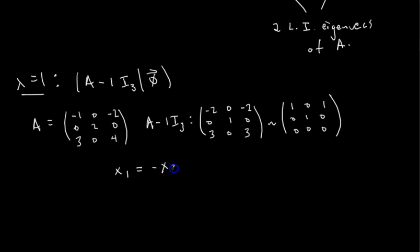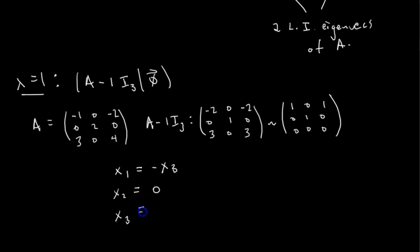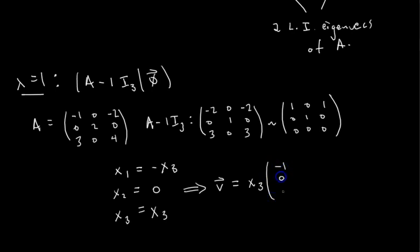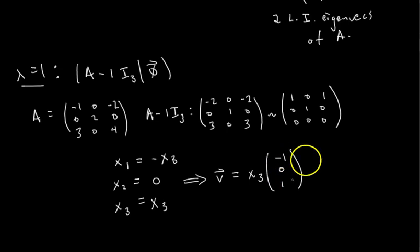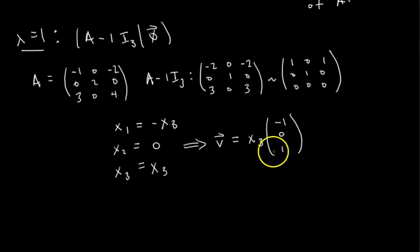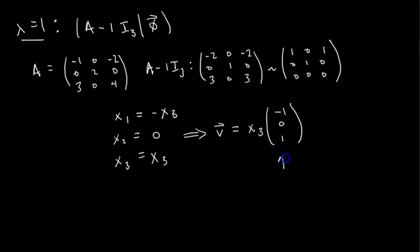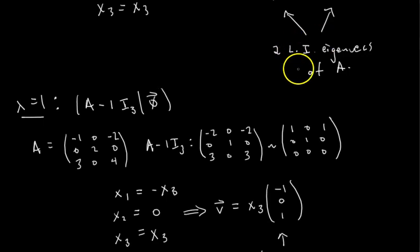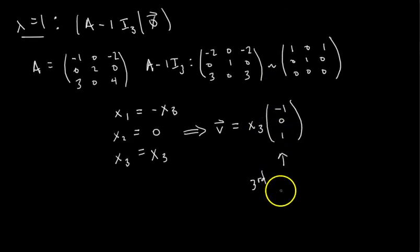Writing the solution set in parametric form: x₁ equals negative x₃ from the first row; x₂ equals 0 from the second row — so x₂ is no longer a free variable; and x₃ is a free variable. So our vectors in the lambda equals 1 eigenspace take the form x₃ times the vector negative 1, 0, 1. This is our third linearly independent eigenvector of A, and the one-eigenspace is one-dimensional with geometric multiplicity 1, as expected.